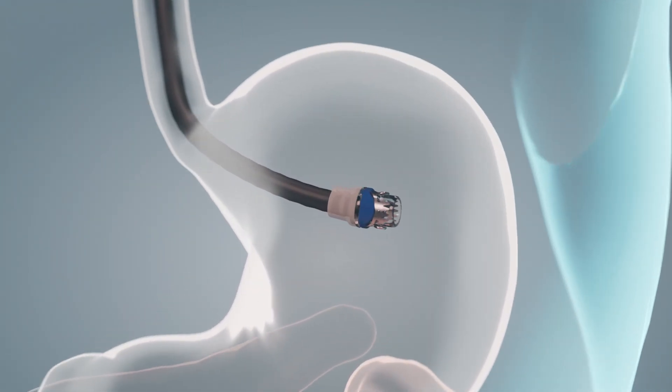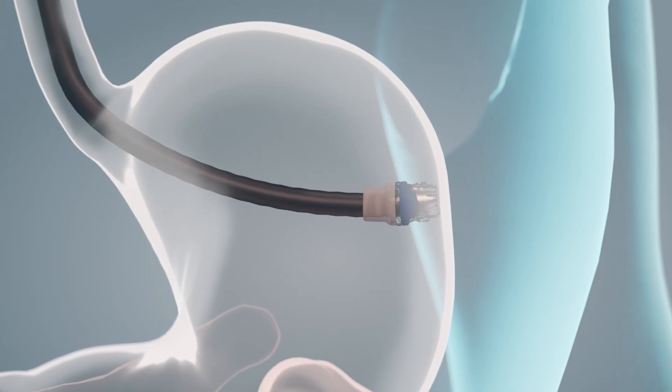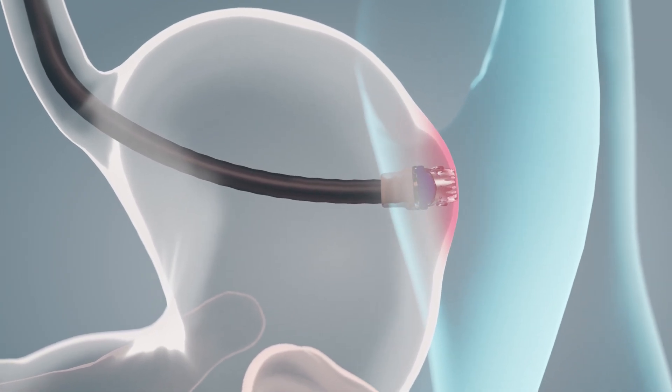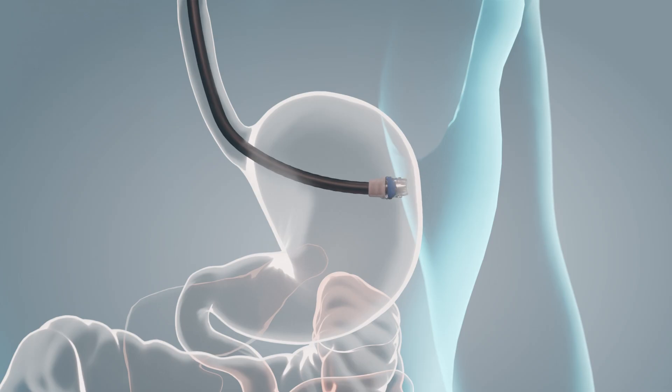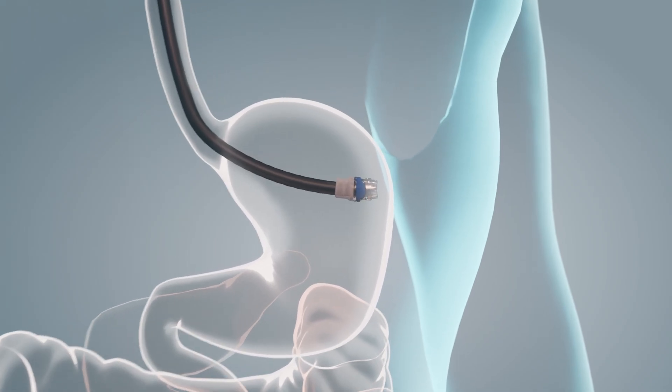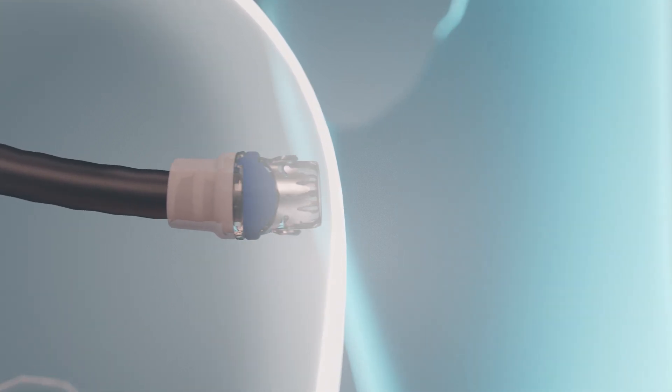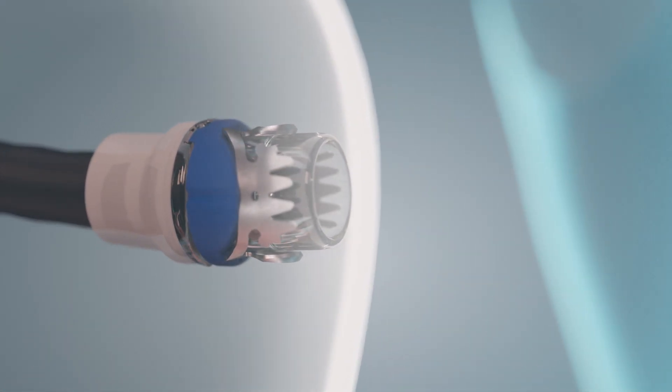Excessive pressure on the tissue can make clip application difficult or even impossible. Therefore, avoid pressing the endoscope tip firmly against the lesion and release some air from the lumen before tissue mobilization. Both measures reduce tissue tension and thus facilitate tissue mobilization.